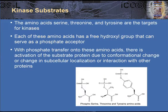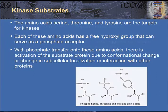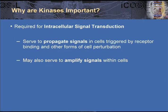Kinases transfer phosphate molecules onto certain amino acids. The amino acids important for phosphate transfer are tyrosine, serine, and threonine, all shown below phosphorylated. The free hydroxyl group on each of these amino acids serves as a phosphate acceptor. When the phosphate is transferred onto these molecules, they become active. The substrate protein can either undergo a conformational change, change its subcellular localization, or become able to interact with other proteins. Phosphates and the transfer of phosphates are required for intracellular signal transduction. Kinases serve to propagate signals in cells triggered when a receptor is bound by its ligand and other forms of cellular perturbation.